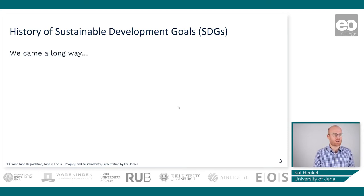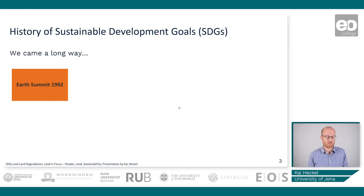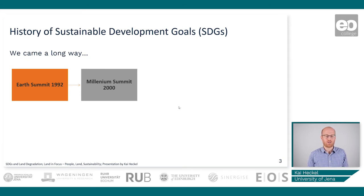The history of the sustainable development goals started with the Earth Summit in 1992, held in Rio de Janeiro. There, the parties came up with the idea of Agenda 21, which was adopted with the overarching idea of building a global partnership for sustainable development across the globe. Eight years later, the Millennium Summit was held at the UN headquarters in New York, where UN members developed eight Millennium Development Goals aimed at reducing poverty by the year 2015.